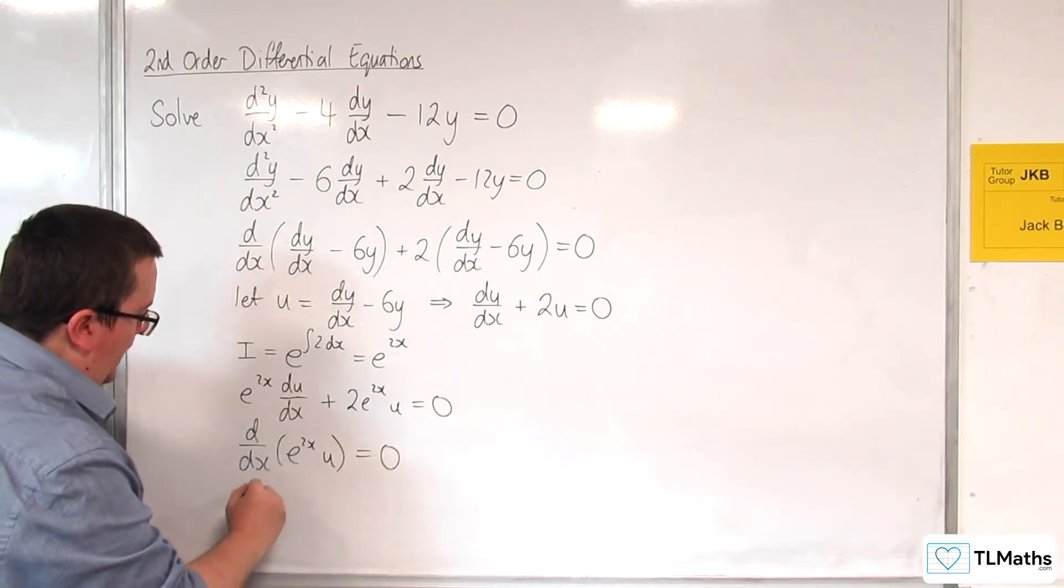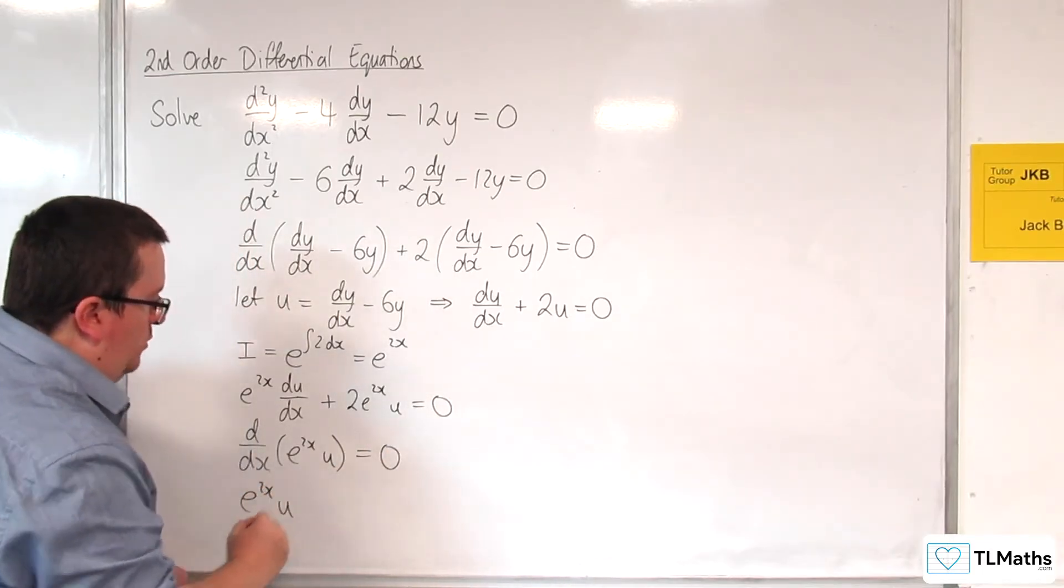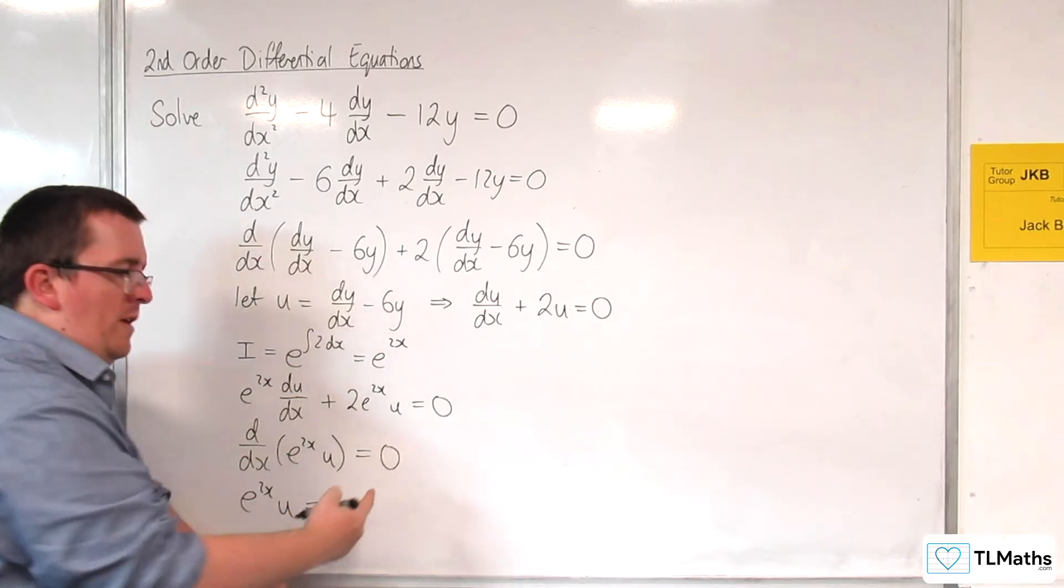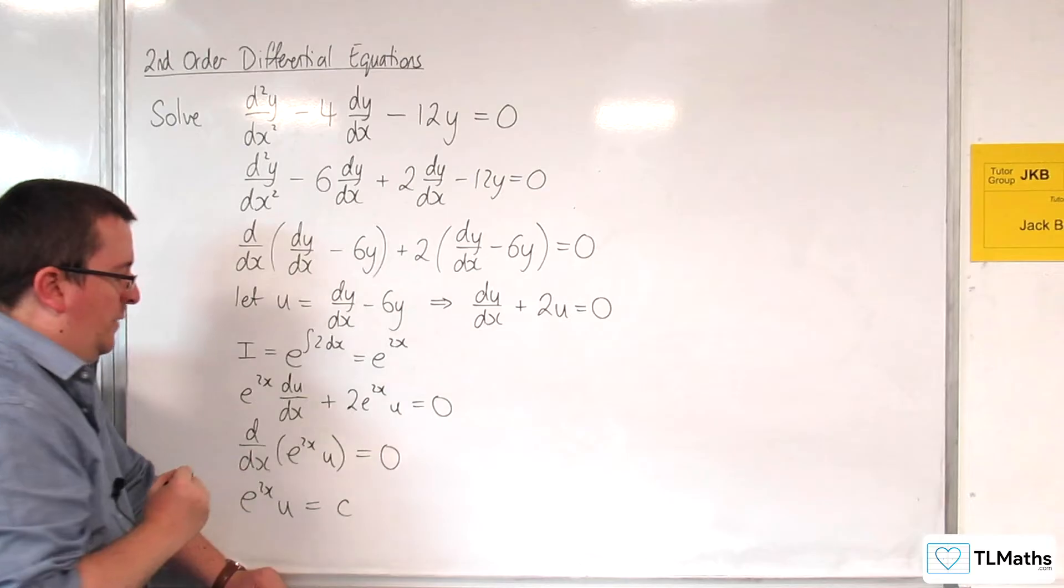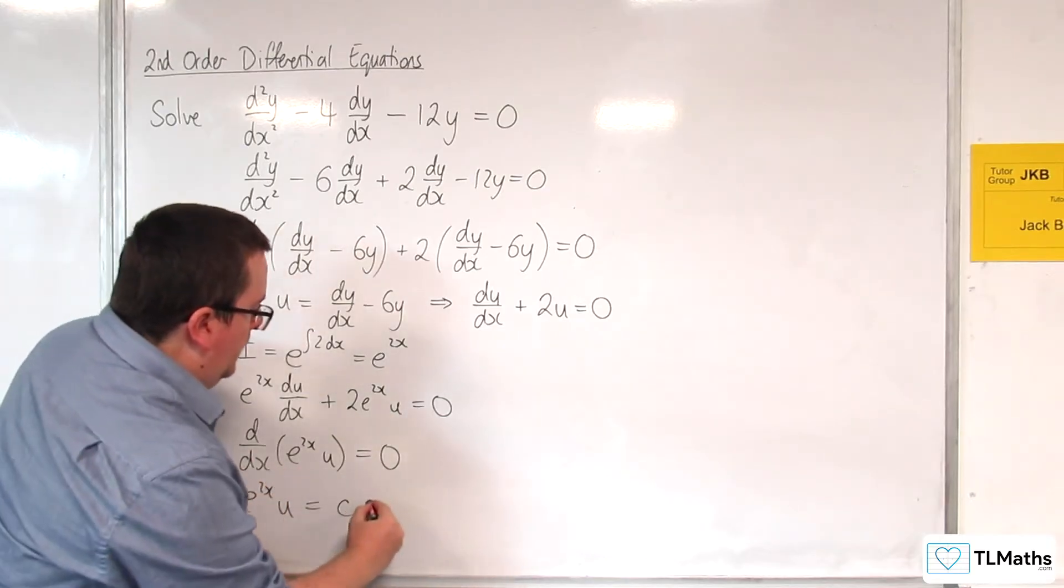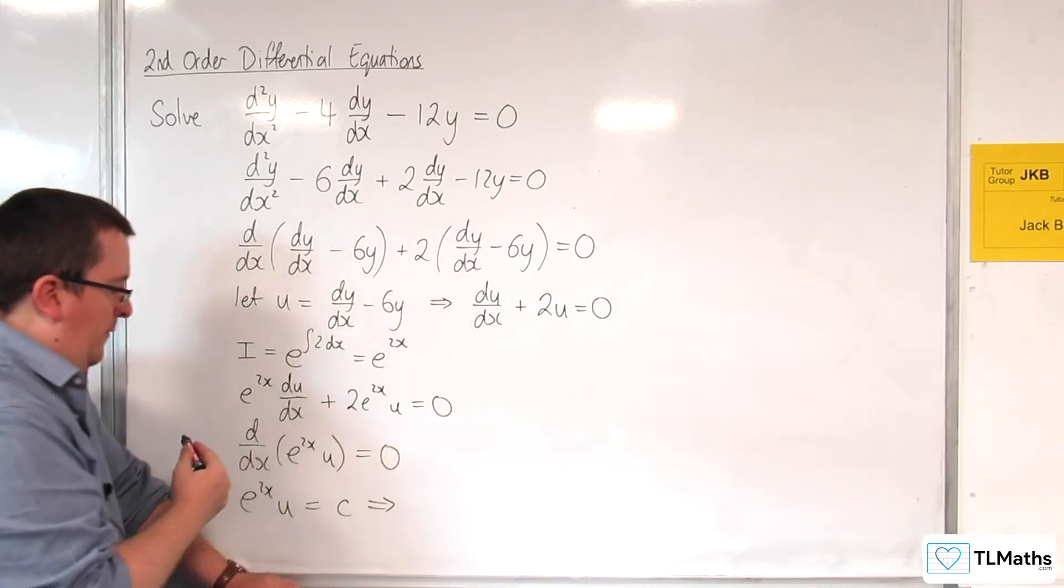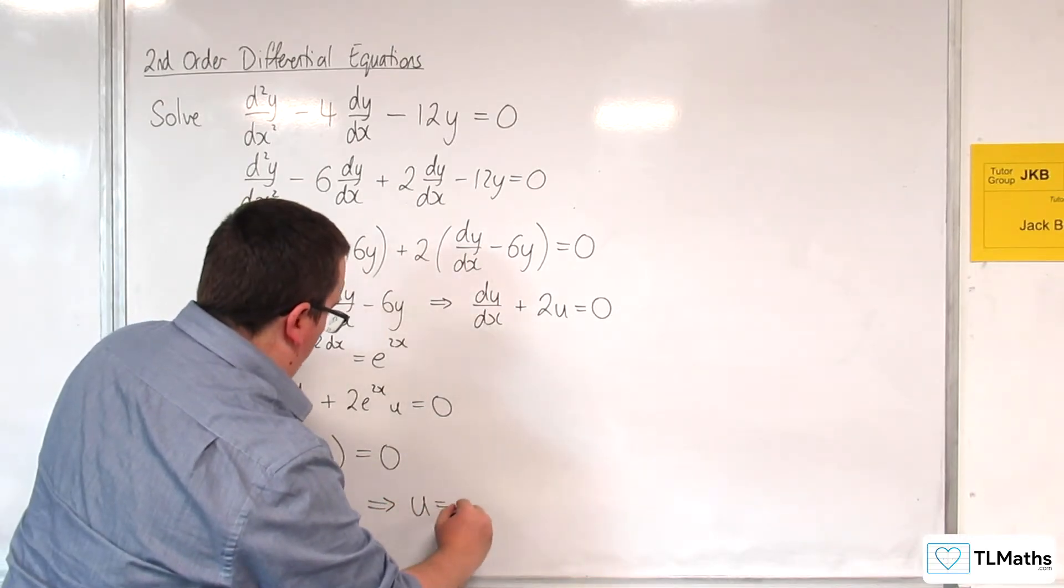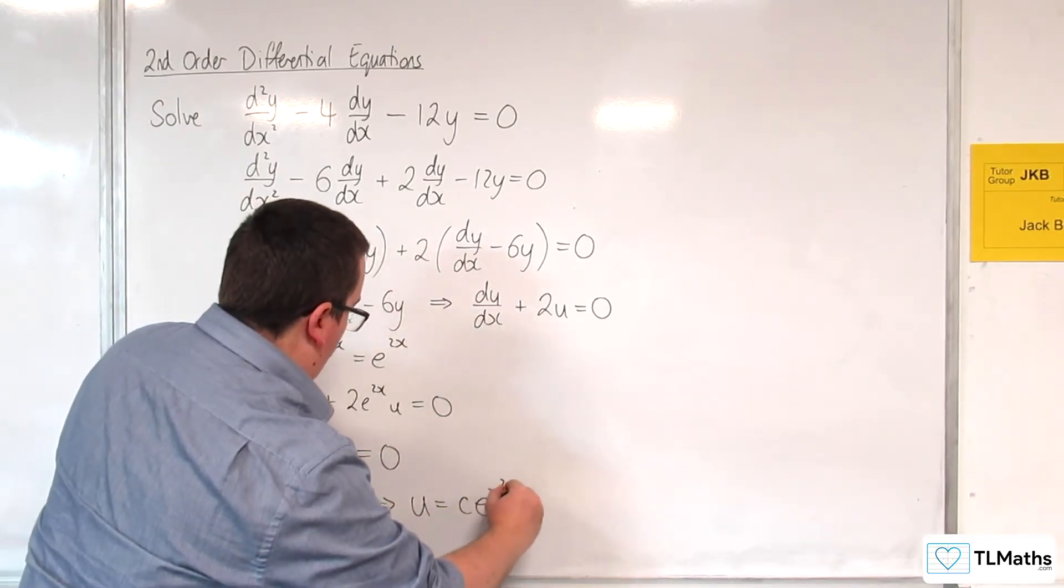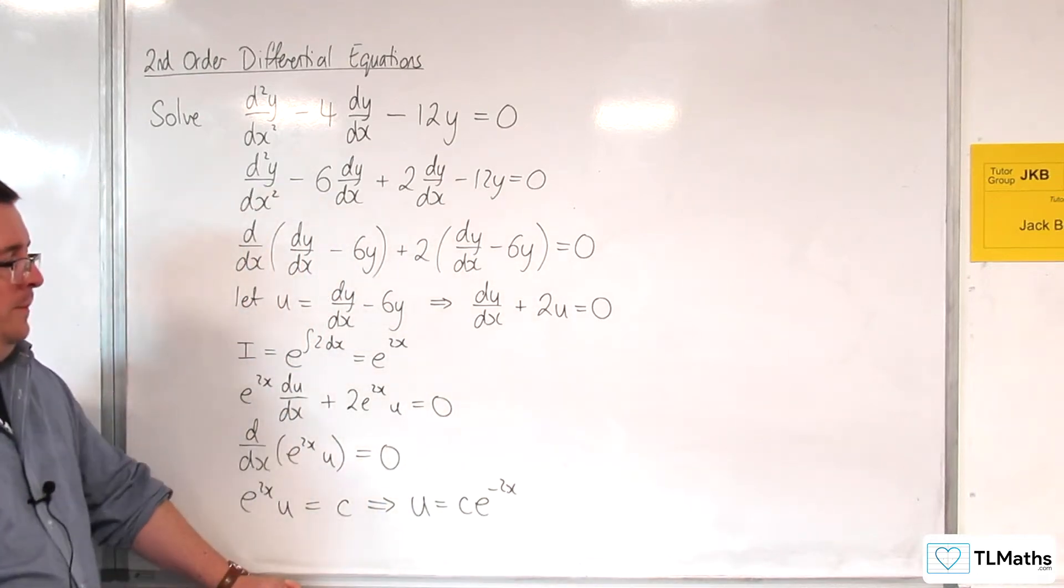And then when I integrate both sides, I get e^(2x)u is equal to some constant. So let's call that c. And so if I divide through by e^(2x), I get u = ce^(-2x).